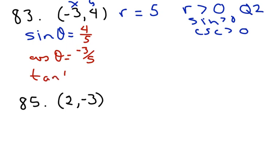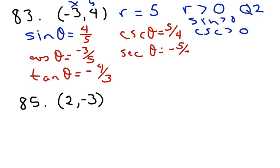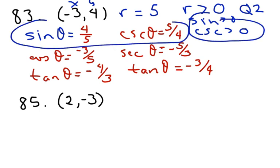And then you just flip them for the others, like we did in class. Cosecant of theta is 5 fourths. Secant of theta is negative 5 thirds. And cotangent of theta equals negative 3 fourths. And again, like I said before, sine and cosecant are our only positive ratios.